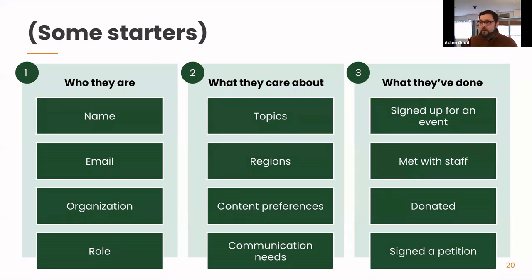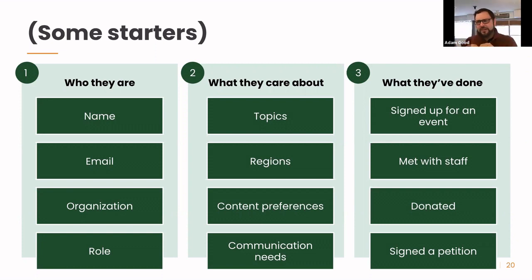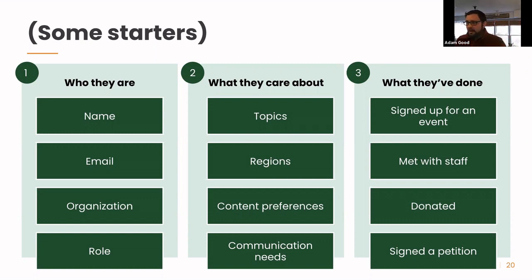Ideally with strategy, everything would already be in place and you would have been tracking this throughout time. But the world is not perfect. Some information you'll have to dig and pull together. You might say, 'We really need to know what topics people care about,' so you'll need to make some changes in your systems and processes to make sure you have that information.